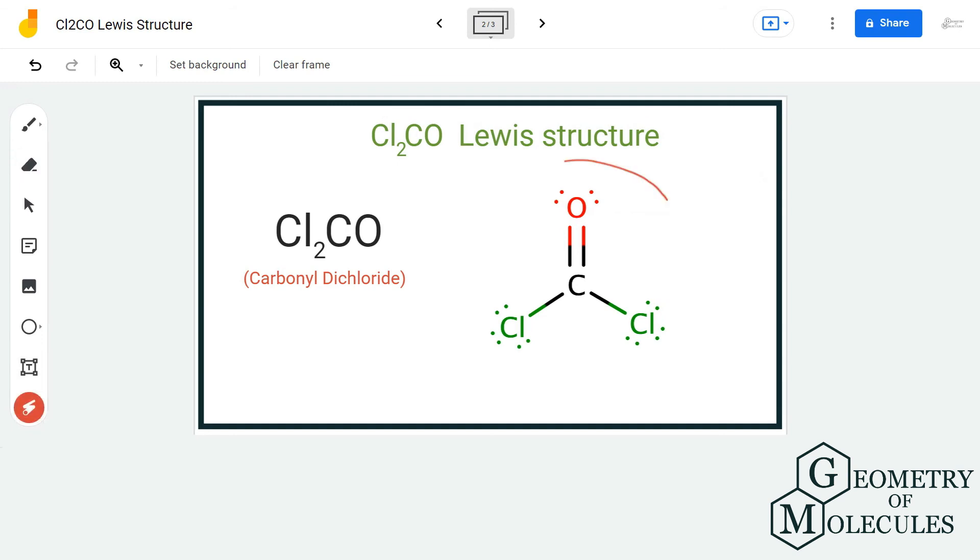And hence now this is the Lewis structure of Cl2CO in which carbon forms two single bonds with two chlorine atoms and a double bond with one oxygen atom.